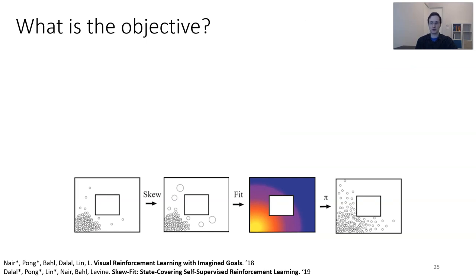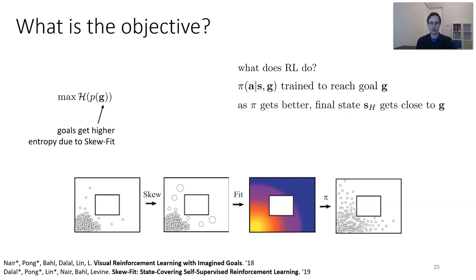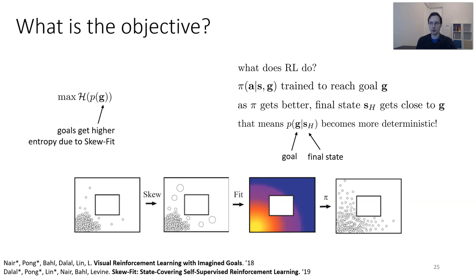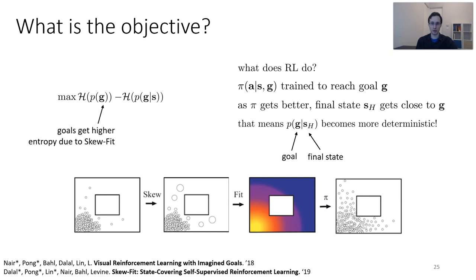We can think about what the objective for this entire procedure is. The skewing process maximizes the entropy of the goals, making them approach the uniform distribution at convergence. And what does RL do? The policy is trying to reach goal G, which means that as the policy gets better, the final state s_H gets closer and closer to G. The probability of G given s_H becomes more deterministic — if you reach G perfectly, P(G|s_H) is just a delta function. So the RL process is actually minimizing the conditional entropy of goals given the state, which is precisely the mutual information we wanted all along. This is in fact optimizing a crude approximation of the same mutual information we previously showed to be the optimal choice for task proposals.